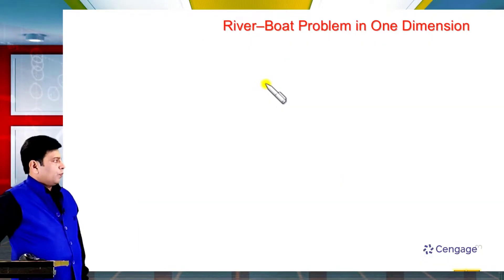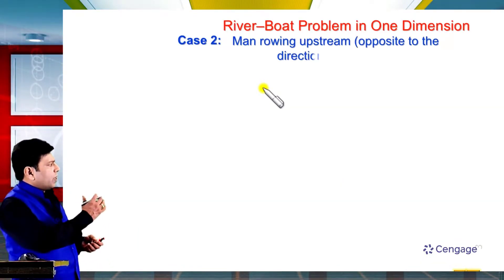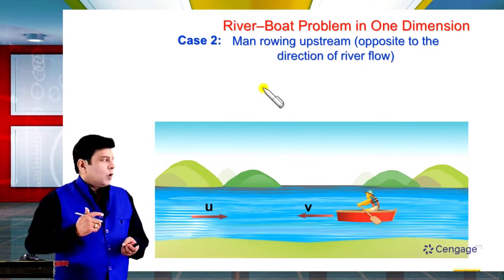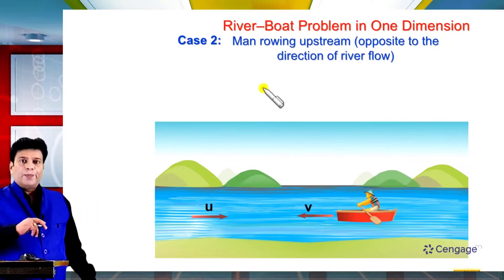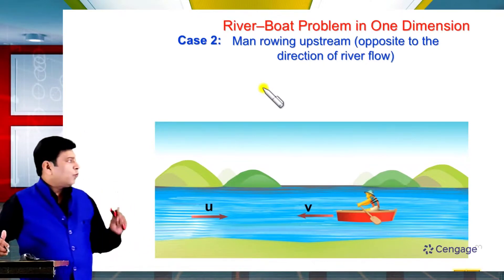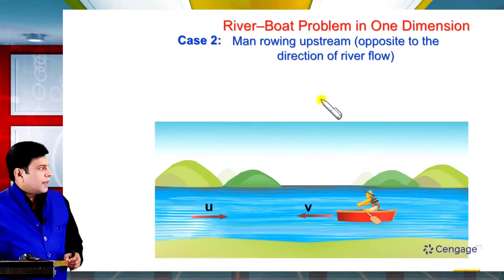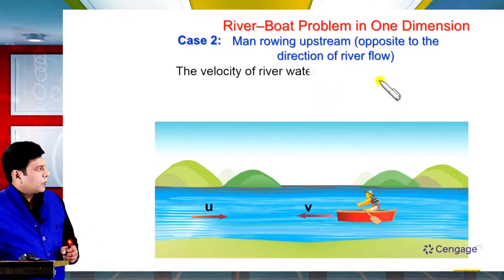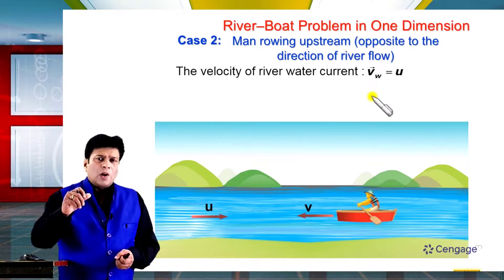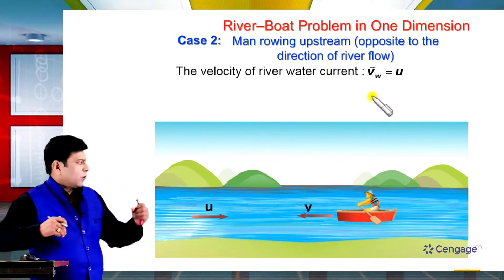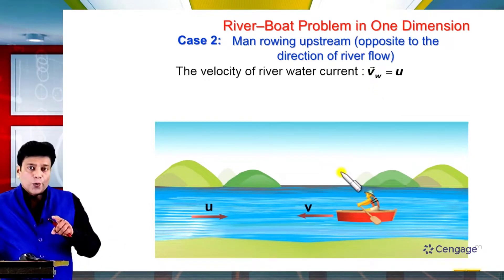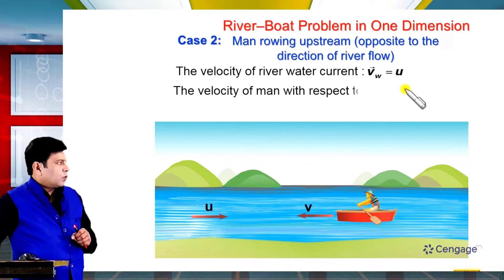Now let us consider Case 2: the man is rowing in the upstream direction, which means opposite to the direction of the river flow. Here we use the same sign convention — rightward direction is positive. So the velocity of the water current is the same as before: VW equals positive U. Now the man is moving in the direction opposite to the assumed positive direction, i.e., leftward, which is negative. So velocity of the man with respect to water equals minus V.